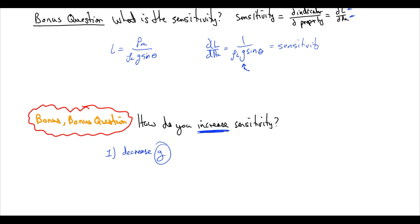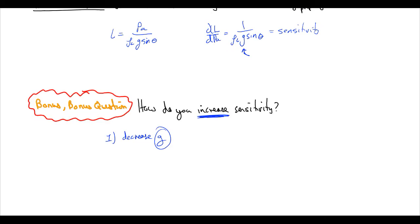Where else is G decreased? I guess on mountains, right? Yeah. Or maybe not. Is it higher on mountains because you have more material between you and the earth? I can't remember.